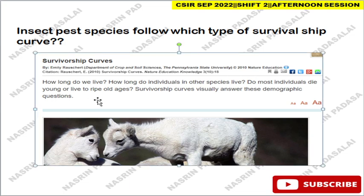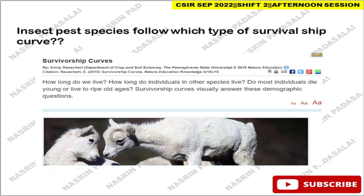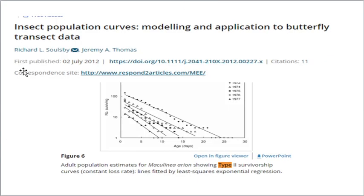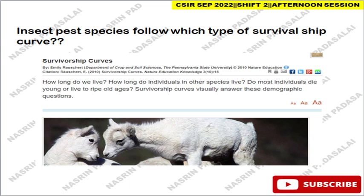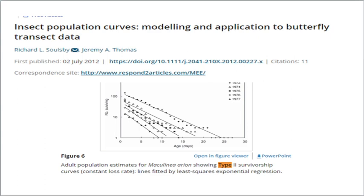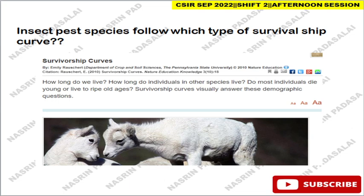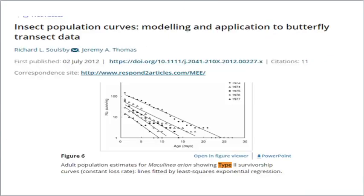Next: insect pest species follow which type of survivorship curve? Referring to a Nature article, there are three types: Type 1 is followed by large mammals with low death rate and high survivability; Type 2 is followed by birds and humans; Type 3 is followed by small mammals, fishes, and invertebrates — high death rate and low survivability. The article mentions insects may follow Type 2, but since insects produce many offspring and have short lifespans, Type 3 is also applicable. Both Type 2 and Type 3 may be correct depending on context.